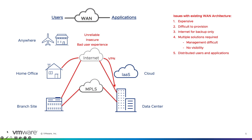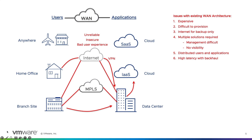Adding to these problems, applications are now being moved to the cloud — to IaaS providers like AWS and Azure, or SaaS providers like Office 365. To connect to these cloud applications, enterprises traditionally used a backhaul architecture, where user traffic was first sent to the data center to be inspected by their firewall for security, and then forwarded to the cloud. This obviously induced latency due to the multiple hops, degrading the end-user experience.